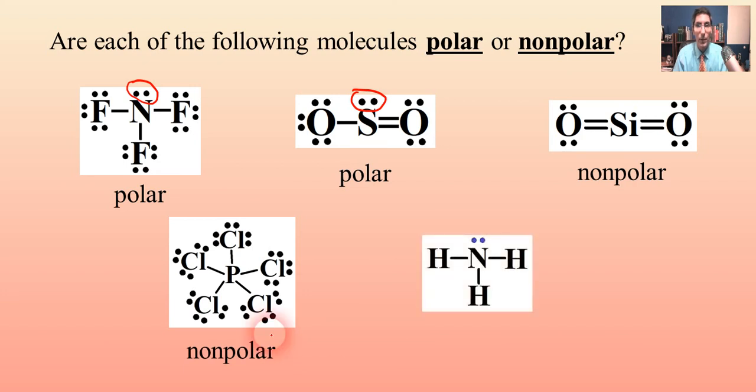One more example. NH3 ammonia. Is this a lopsided molecule? Definitely it is, because look at that. We have an unshared pair on the central atom. It's not balanced out by anything else on the molecule. So we can say that ammonia, NH3, is a polar molecule.